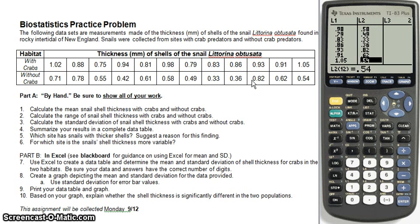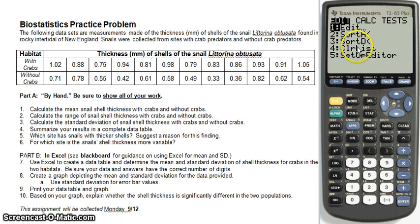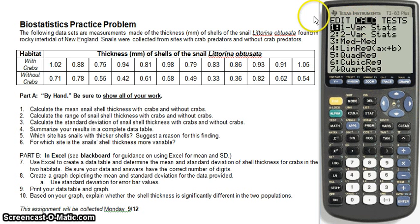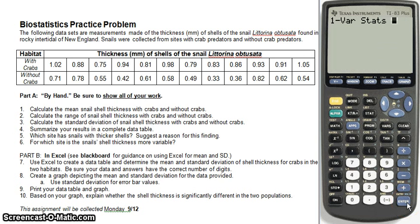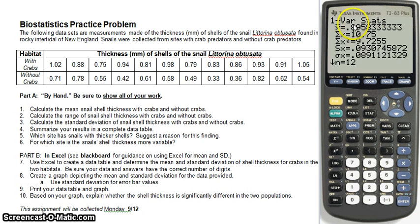Now let's calculate our mean and standard deviations for each of our two lists. We go back into STAT, and instead of Edit, go over to CALC by pressing the right arrow. The first choice is one-variable statistics, which is what we want, since there's only one variable that differs between the two groups — their habitat. Click Enter, then tell it to analyze list 1 by pressing Second and then 1 for L1, and hit Enter. It gives us the mean — x-bar — and for the data with crabs the mean is 0.895, or 0.896.